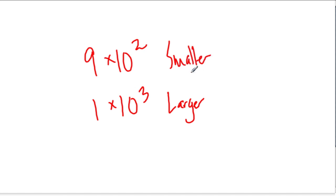So, just look at one more example. Let's say we had 9 times 10 to the 2nd, versus 1 times 10 to the 3rd. Well, again, don't assume that this number is larger because 9 is bigger than 1. Look at the exponents first. This number is actually larger. And this number is smaller. Why? Because the exponent 3 is bigger than the exponent 2.